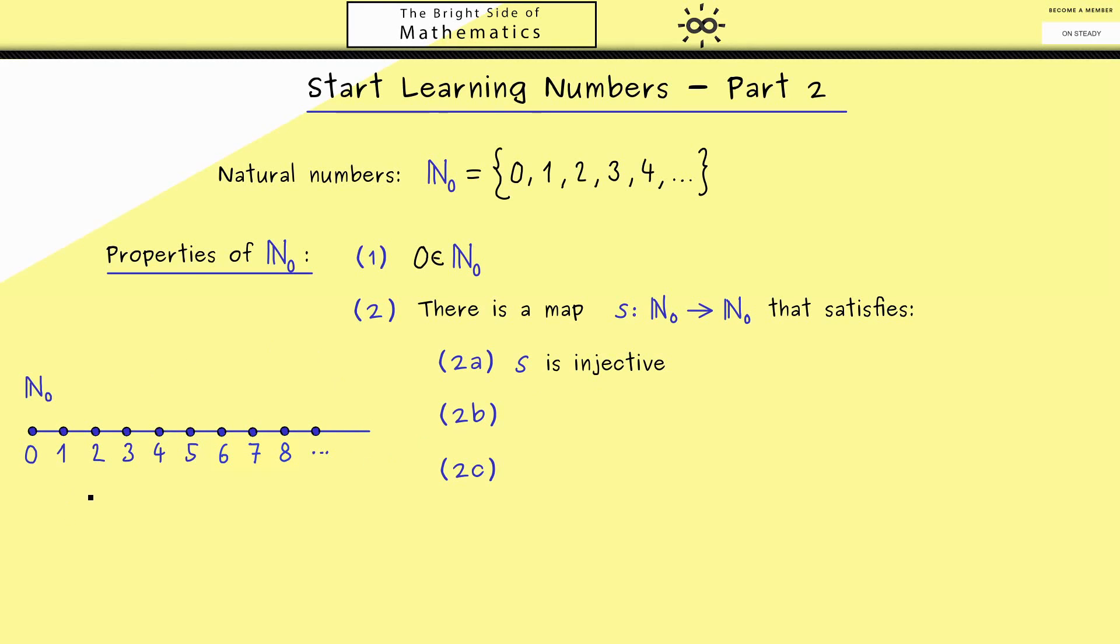What you should also see here is that 0 is not a successor for any natural number. One possibility to write that down would be saying that 0 is not in the range of s. Please recall the range is just the image of the whole domain, namely of ℕ₀.